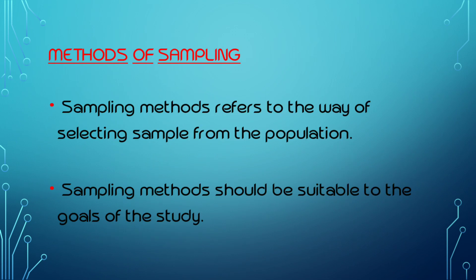What is the method of sampling? Sampling methods refers to the way of selecting samples from the population. You can select samples from the population using different sampling methods.